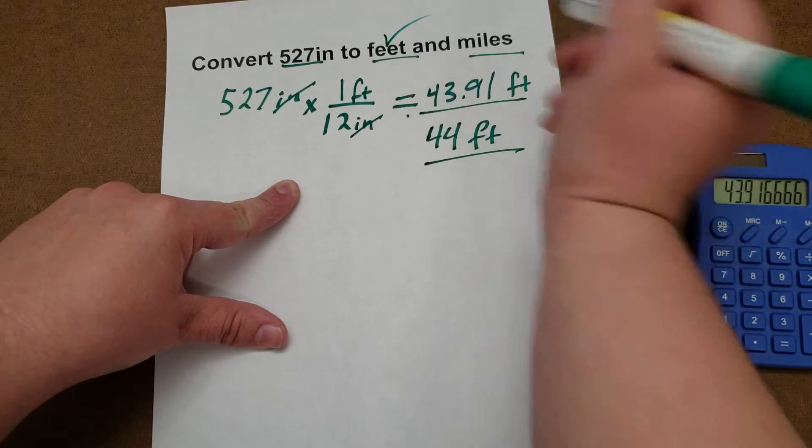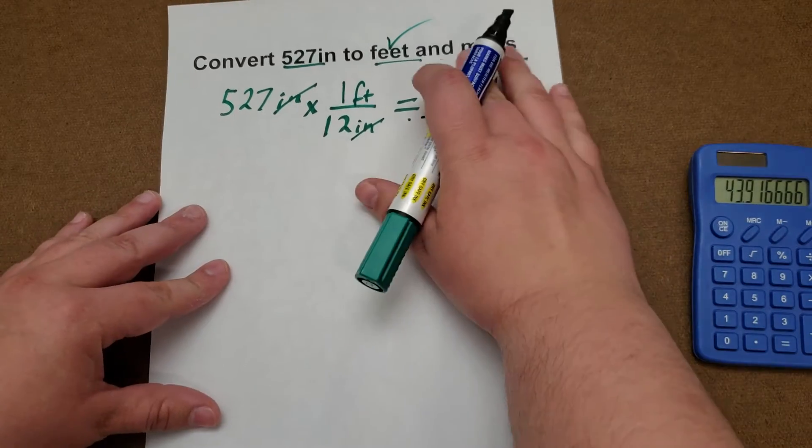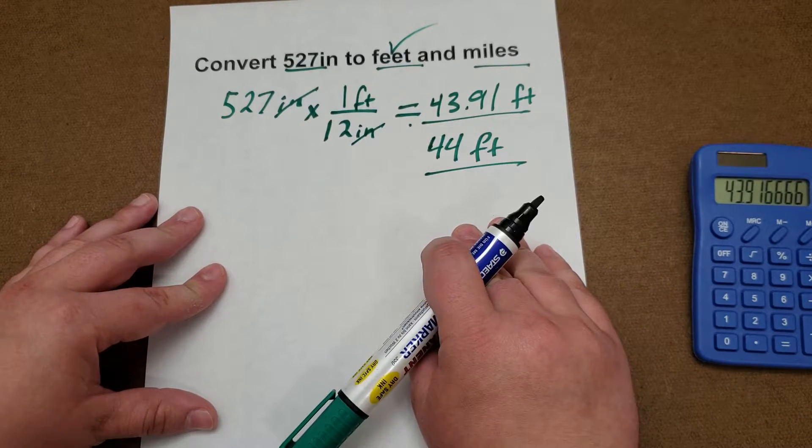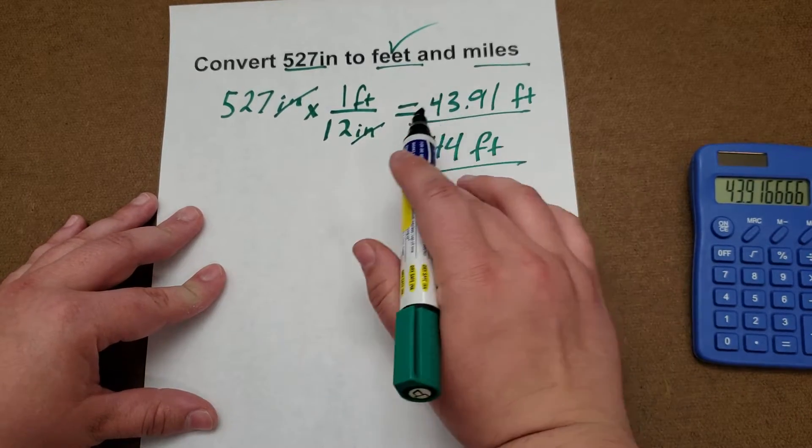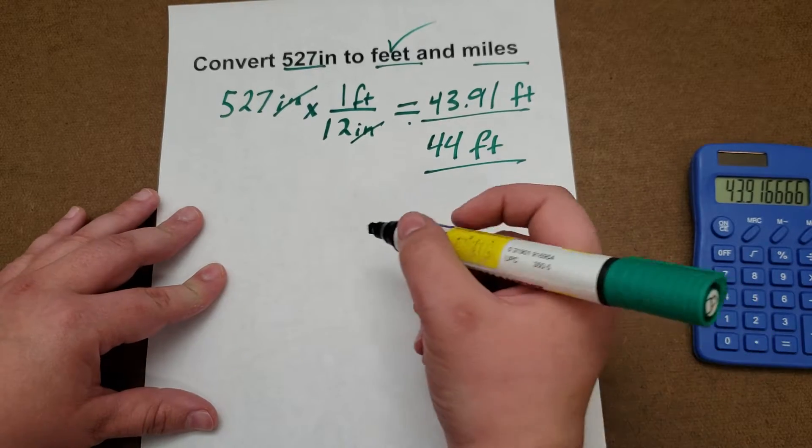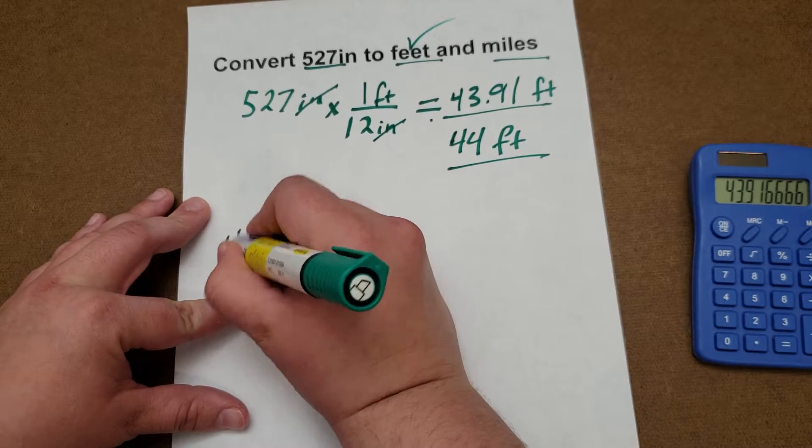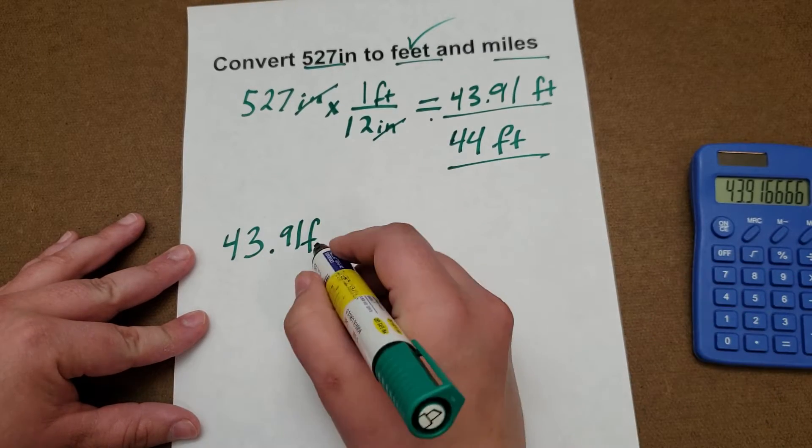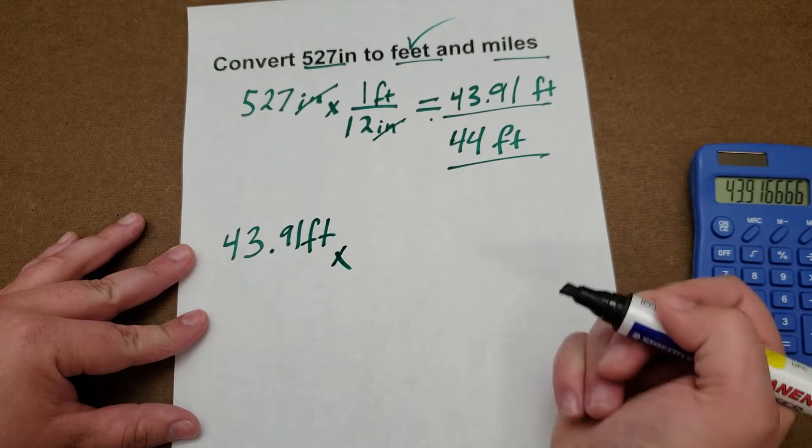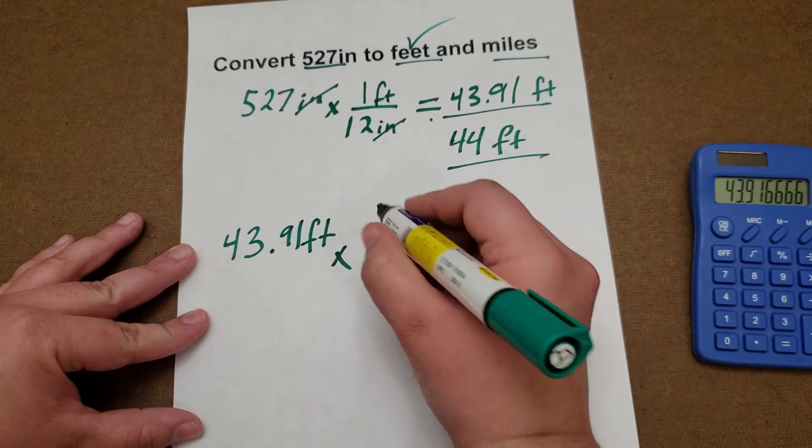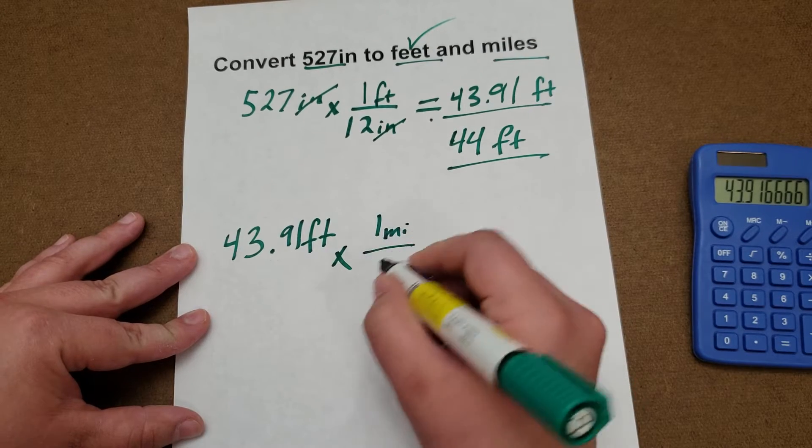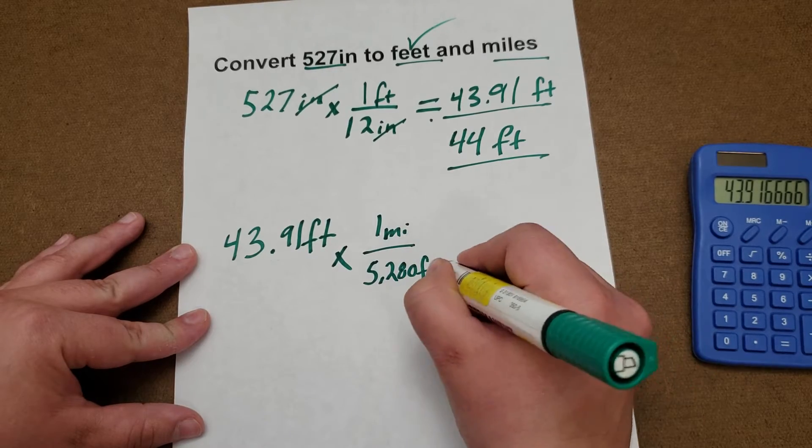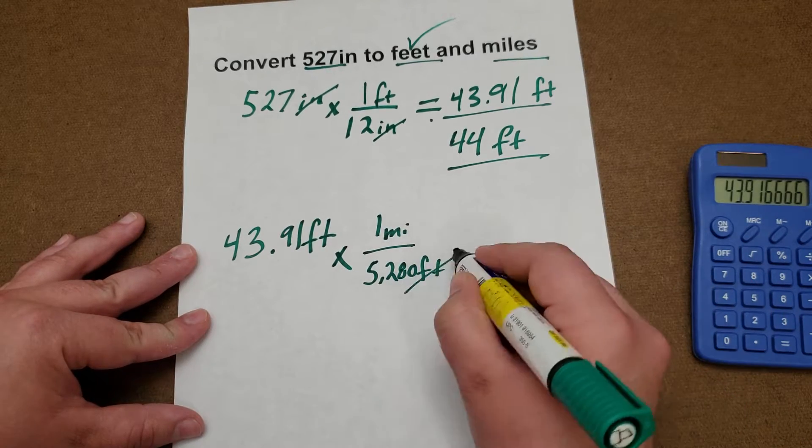So that one is done. Next, we're going to solve for our miles. We are going to start with the answer we got previously using one with the more decimal places. So we are going to take 43.91 feet, and then the conversion for feet into miles is one mile is 5,280 feet, so your feet cancel, giving you your answer in miles.